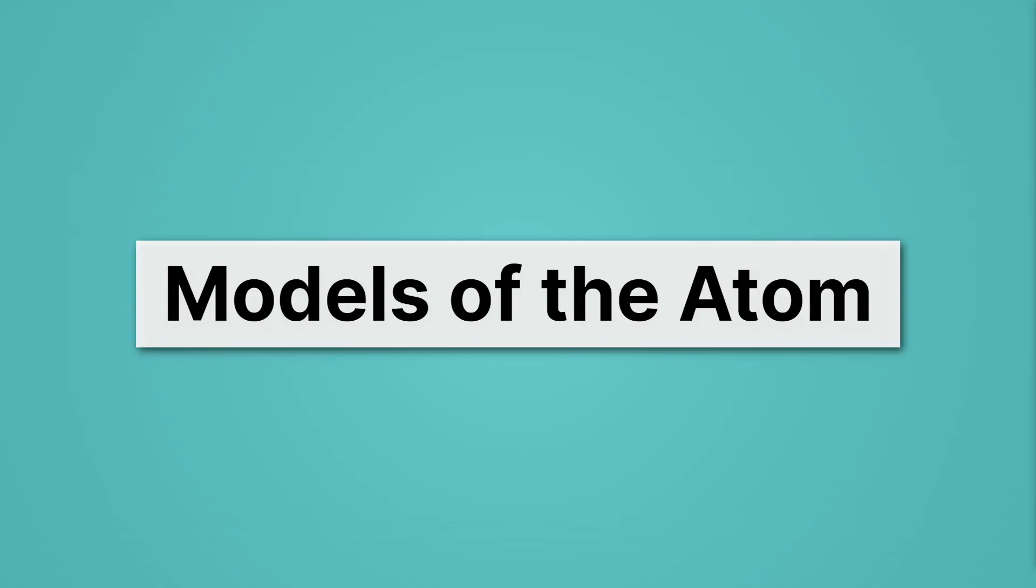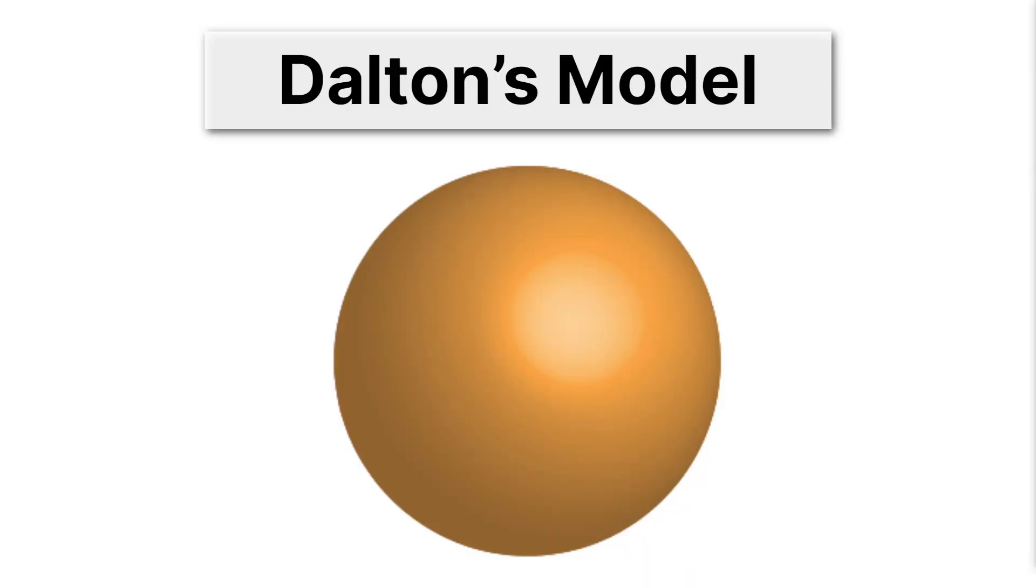Well let's start with the models of the atom. We're going to go here in historical order. So remember, we started by discussing Dalton's model of the atom. Here he pictured a solid sphere without any parts.